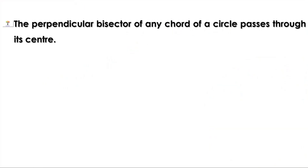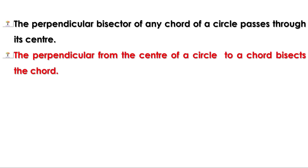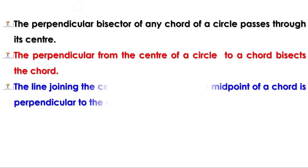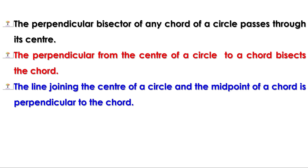The perpendicular bisector of any chord of a circle passes through its center. The perpendicular from the center of a circle to a chord bisects the chord. The line joining the center of a circle and the midpoint of a chord is perpendicular to the chord.